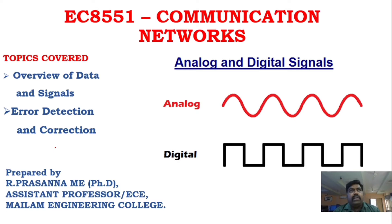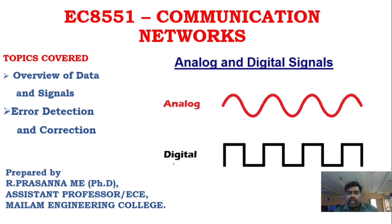When it comes to data signals, there are mostly only two types of waveforms, two types of signals: one is analog and the other is digital. You can see here the analog signal representation and the digital signal representation.